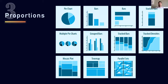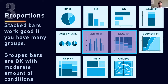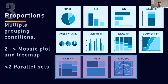For proportions, we again have pie charts, bars, stacked bars, and all these elements. If you have a few groups — say two or three — you can use grouped bars or stacked bars. But if you have multiple grouping conditions and still want to describe proportions between them, you may want to use mosaic plots and tree maps. If you have more than two grouping conditions, then you may want to use parallel sets.